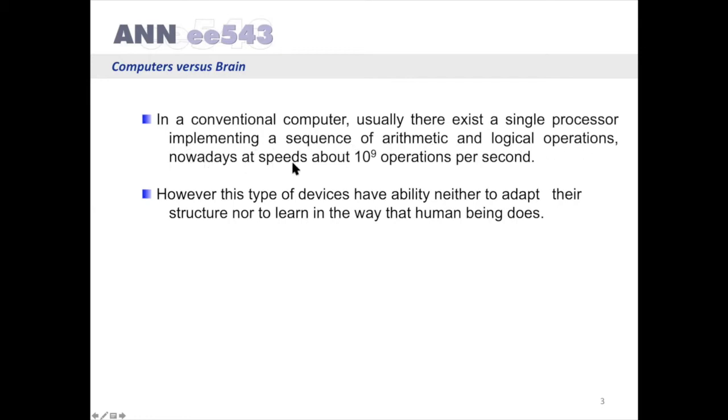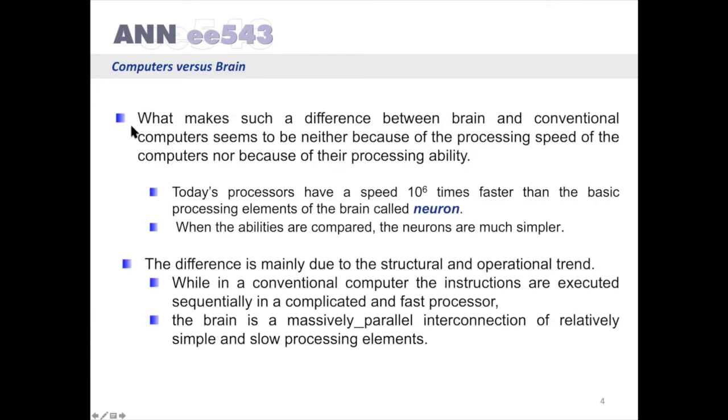Nowadays at speed about 10 to the power 9 operations per second. However, this type of device has the ability neither to adapt its structure nor to learn in the way that human beings do. What makes such a difference between brain and conventional computers seems to be neither because of the processing speed of the computers nor because of their processing ability.